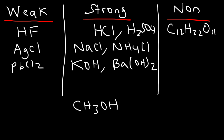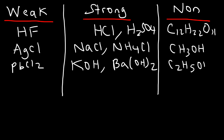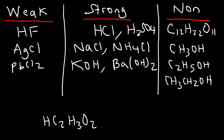Typically when you have a hydrocarbon — a molecule of carbon, hydrogen, and maybe some oxygen — for the most part it's going to be a non-electrolyte. Alcohols like methanol (CH3OH) and ethanol (C2H5OH, also written CH3CH2OH) are non-electrolytes. They do not ionize. They're polar and dissolve in water, but they don't form positive or negative charges and therefore don't conduct electricity.